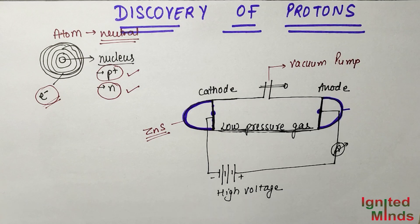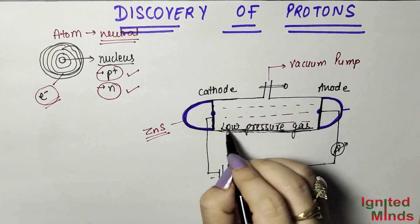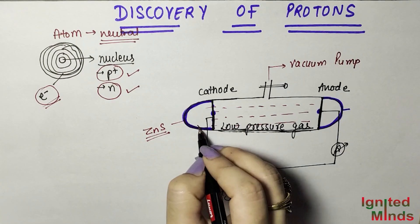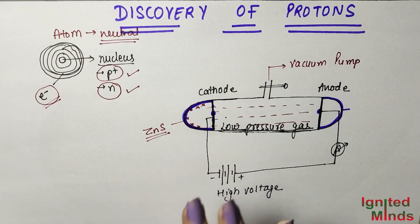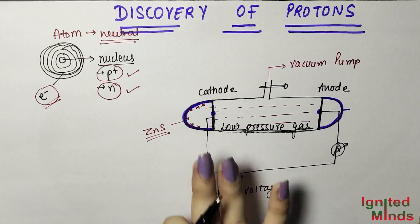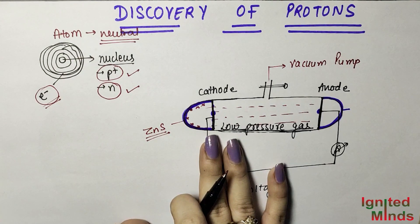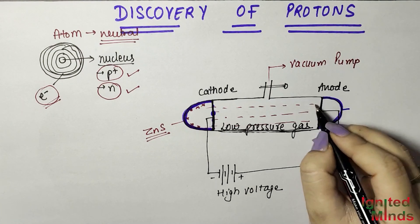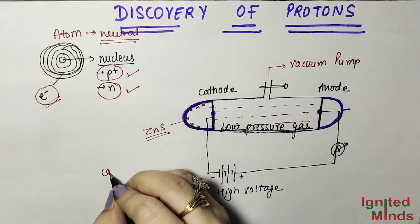The screen definitely glowed, confirming these rays carry positive charge. Because the rays travel from anode toward cathode, they are positively charged — and we called these positively charged rays 'canal rays,' also known as anode rays.